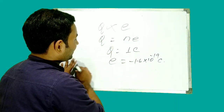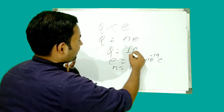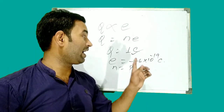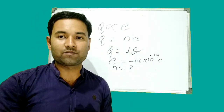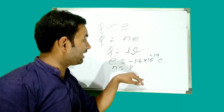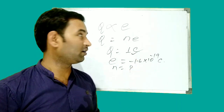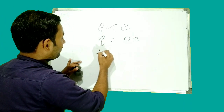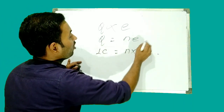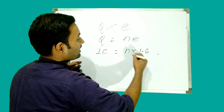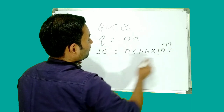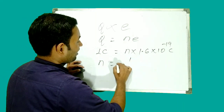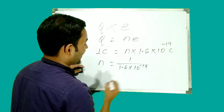Let's take a look at this equation to find how many electrons can give 1 Coulomb of charge. One electron charge is equal to 1.6 × 10⁻¹⁹ C. We need to arrange this: Q is equal to 1 C. The number of electrons n is equal to 1 divided by 1.6 × 10⁻¹⁹, which gives us the total number of electrons equal to approximately 6.25 × 10¹⁸ electrons.